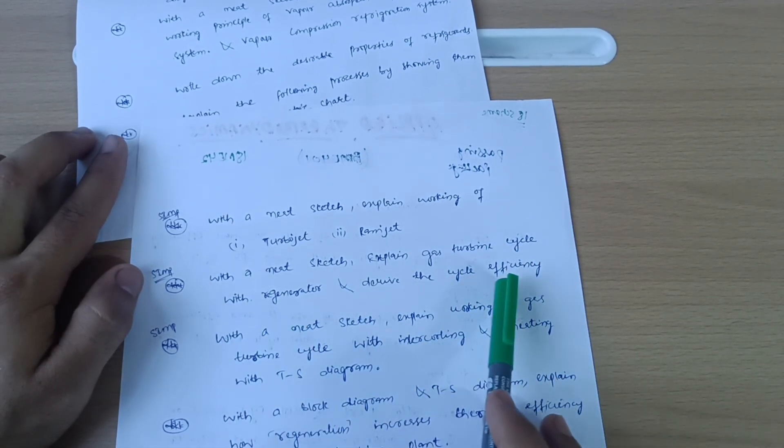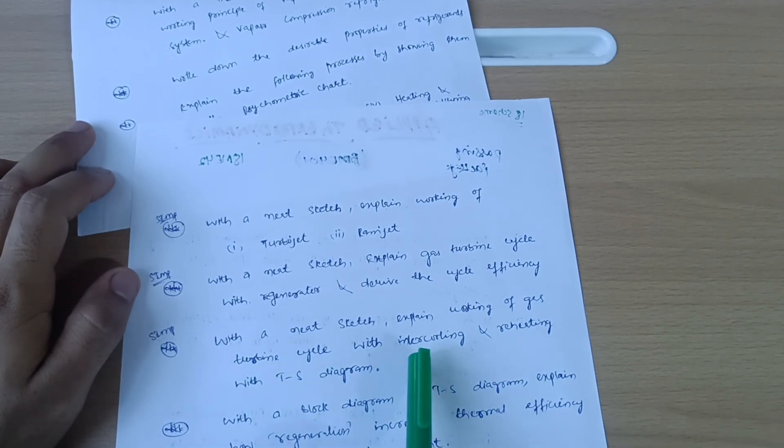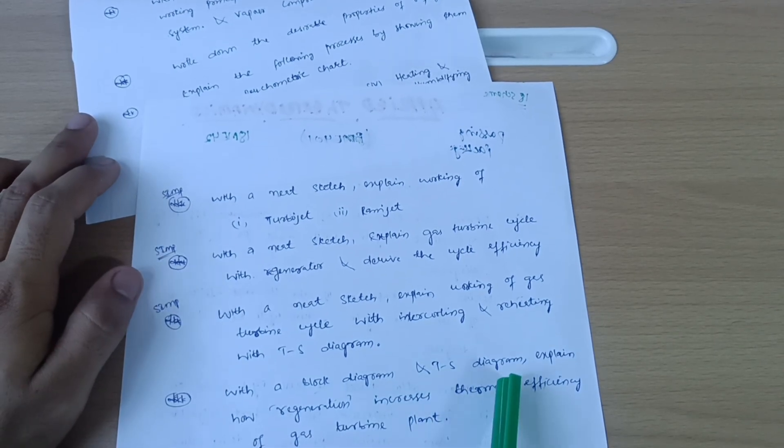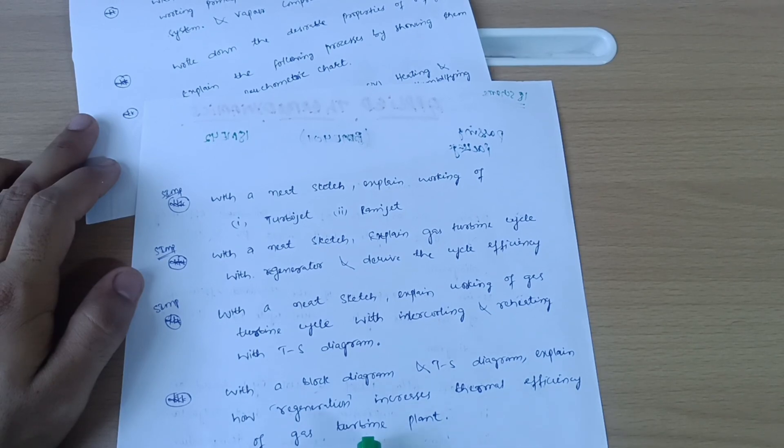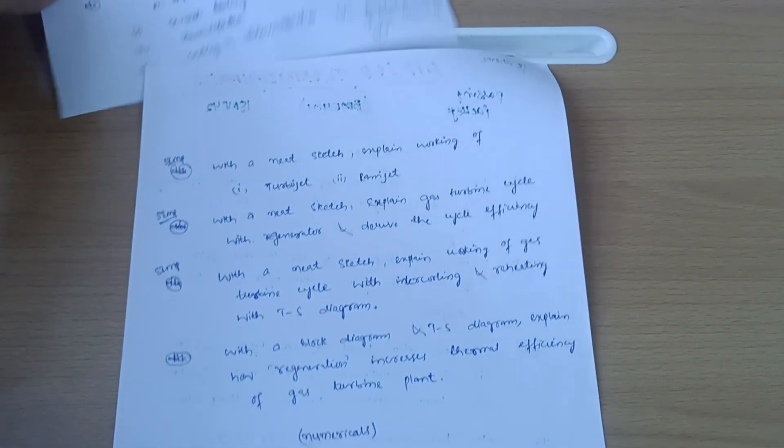With a neat sketch, explain working of gas turbine cycle with intercooling and reheating with TS diagram. Last question from Module 2: with a block diagram and TS diagram, explain how regeneration increases thermal efficiency of a gas turbine plant. If you are convenient, go through the numerical part.